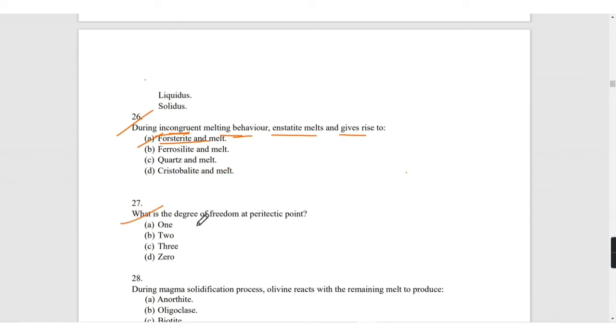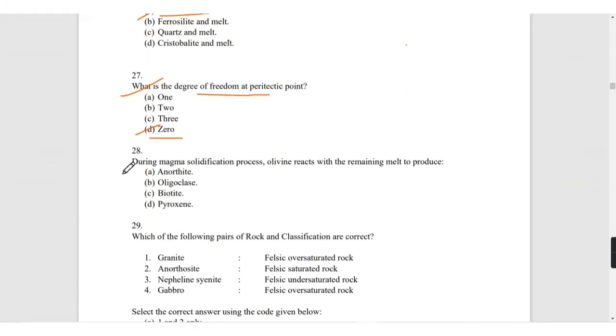What is the degree of freedom at peritectic point? At peritectic point it will be zero. During magma solidification process, olivine reacts with remaining melt to produce pyroxene. You can watch my CSIR NET videos where I have explained about the Bowen reaction series. If there is a crystal, when it reacts with the melt and if it is olivine, then next will be pyroxene.